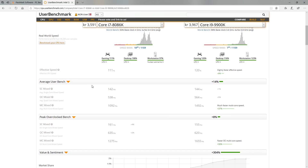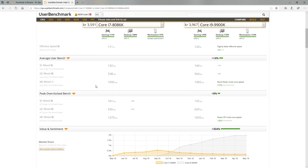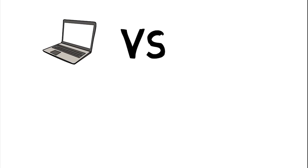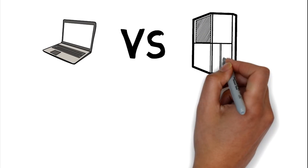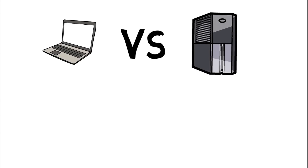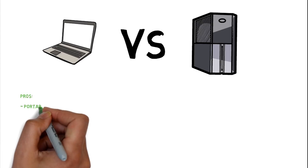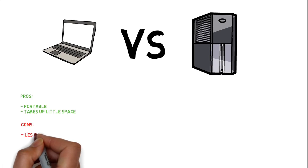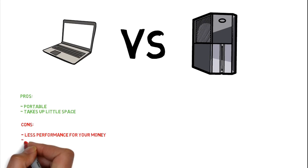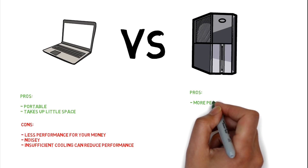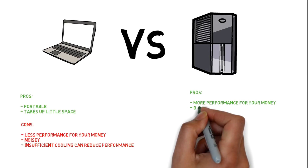Now that you know what to look for in a CPU, let's look at laptops versus stationary computers. There are pros and cons to both. If you're constantly on the move, then a laptop is the obvious choice. The cons with a laptop though is that they typically offer far less performance for the price versus a stationary computer. They also tend to heat up easily due to insufficient cooling and you'll end up with a lot of fan noise. A stationary computer is typically much faster, cheaper, and quieter. The downside of course is that it's not very mobile.